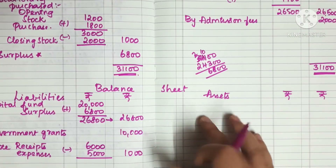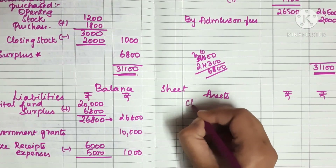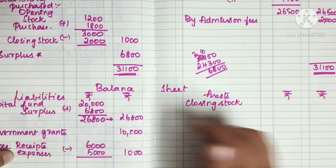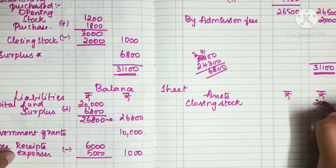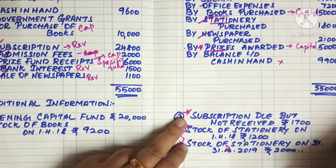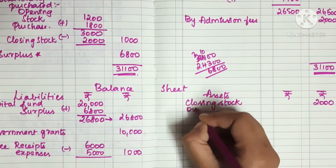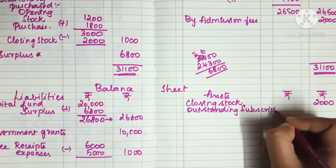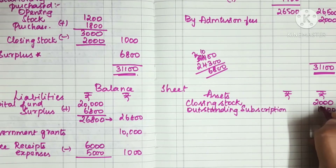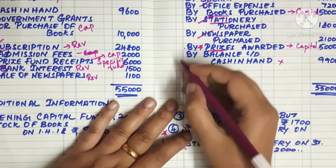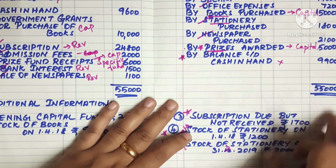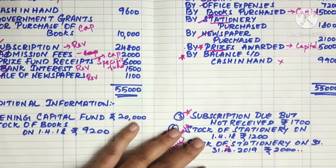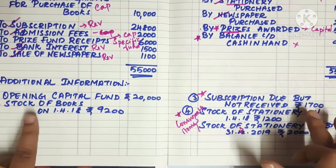Now we move to the asset side. Closing stock of stationery is 2,000. We have outstanding subscription. The adjustments are on two sides — outstanding and closing stock. Next is the closing cash balance: cash is 9,900. We have the adjustments for the stock — opening balance is considered along with these asset entries.